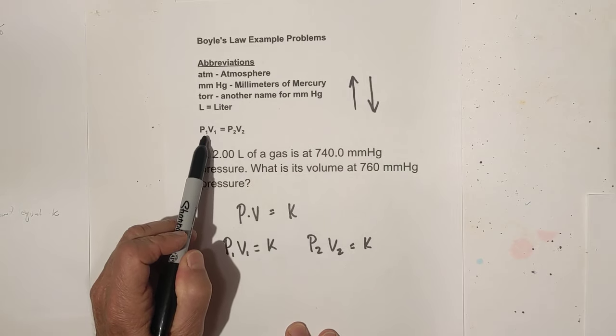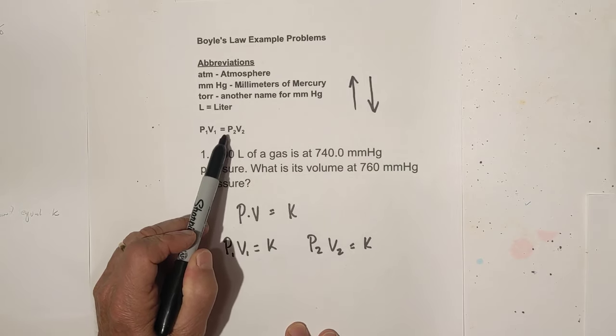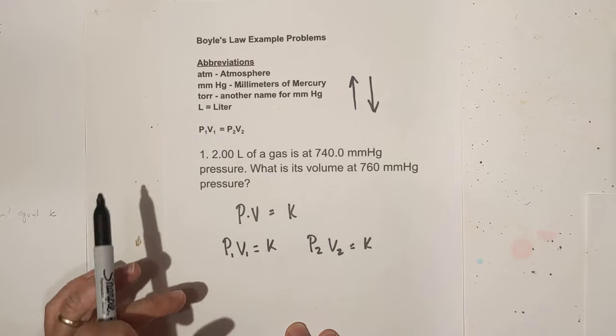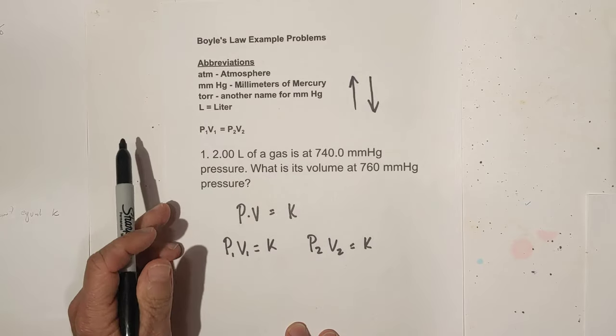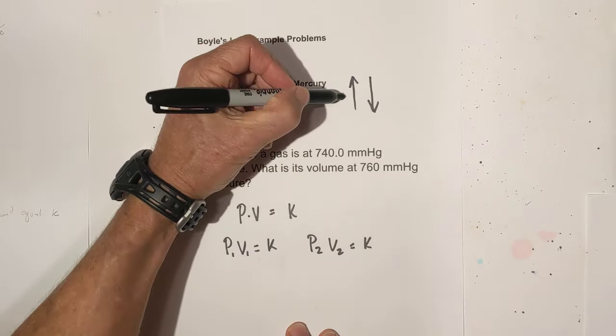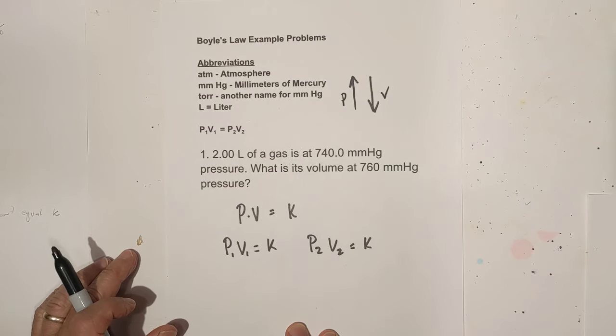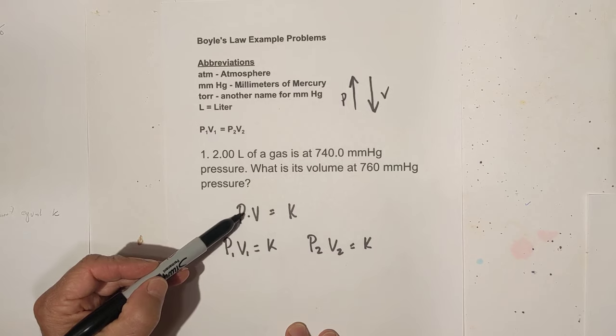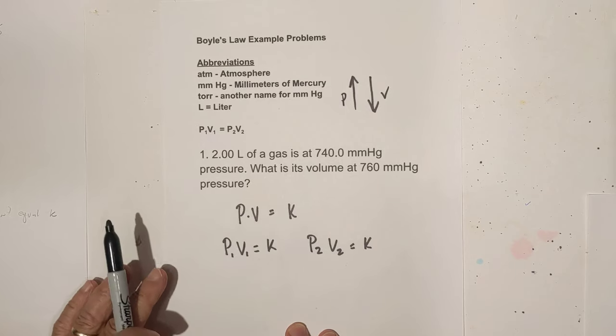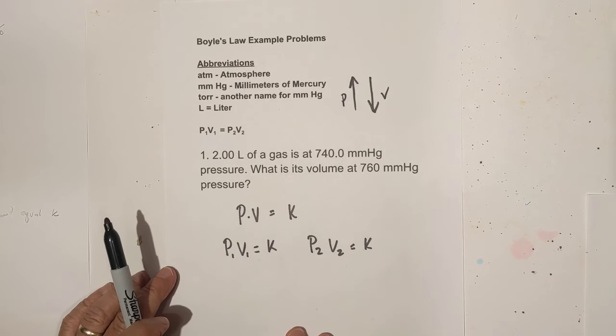We'll use the formula P1 times V1 equals P2V2. Now, you could rewrite Boyle's law. Remember, Boyle's law says that as pressure goes up, volume goes down, and the other way around. So you could rewrite it: pressure times volume is equal to K, and K is a proportionality constant.